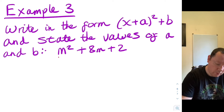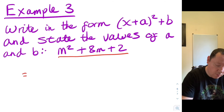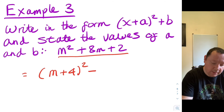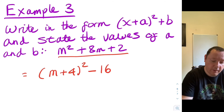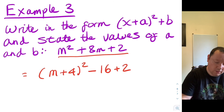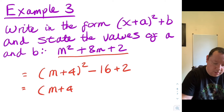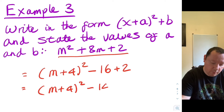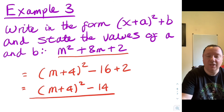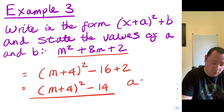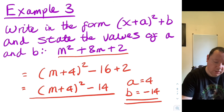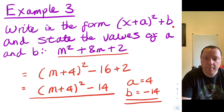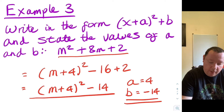So if we look at the question m squared plus 8m plus 2, to complete the square we do m plus 4 squared, because half of 8 is 4. Then 4 times 4 is 16, so we immediately take away 16, just like we did previously. But now there's also the add 2 from the original, so we keep the add 2 in. Minus 16 add 2 is minus 14, so the final answer is m plus 4 squared minus 14. State the values: a equals 4 and b equals minus 14. Note that a or b could obviously still be negative numbers, so a negative answer is fine.